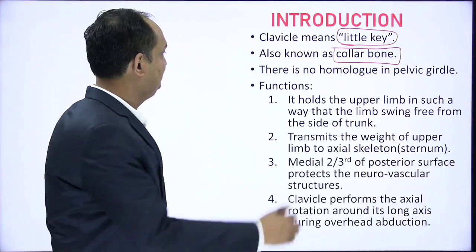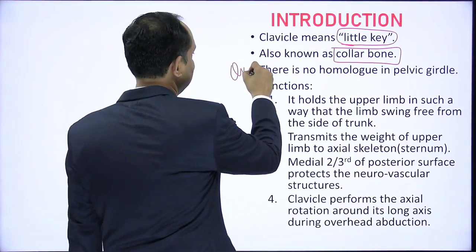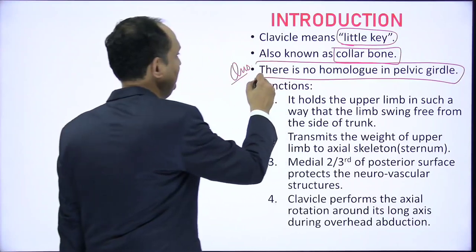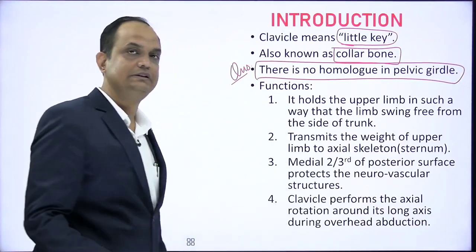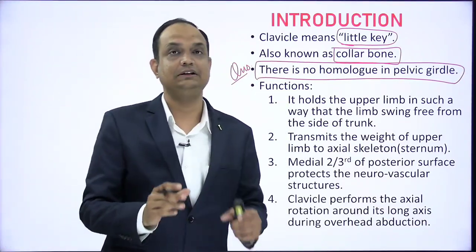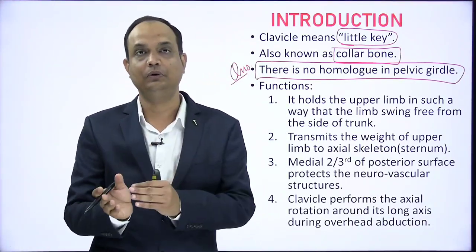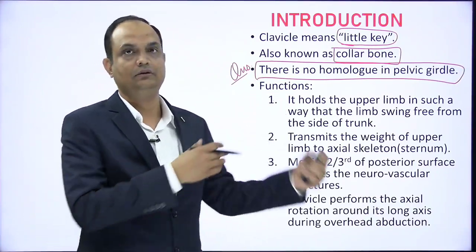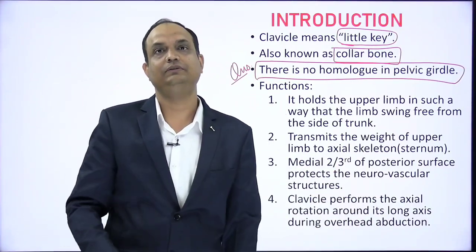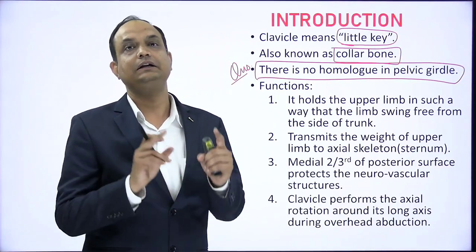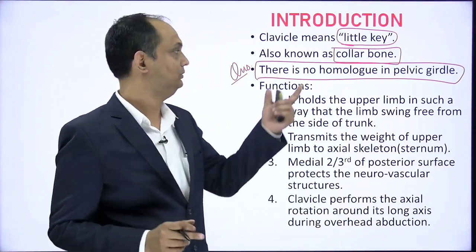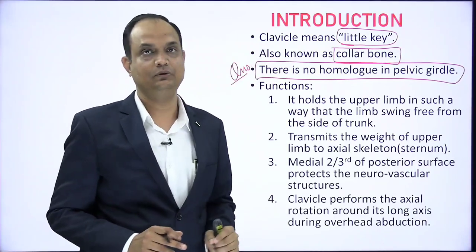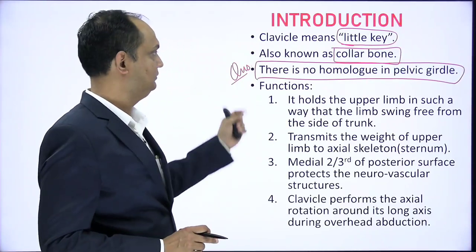An important exam question: there is no homologue of the clavicle in the pelvic girdle. In the lower limb, the scapula is homologous to the hip bone, and the humerus is homologous to the femur. But there is no bone in the lower limb that represents the clavicle bone.